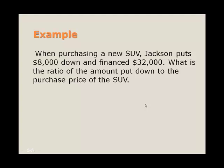When purchasing an SUV, Jackson puts down $8,000 and financed $32,000. What's the ratio of the amount put down and the purchase price of the SUV? So the amount put down was $8,000 and $32,000 was financed. So I think we would first need to figure out how much the actual purchase price was. And so the purchase price is simply the sum of $8,000 and $32,000, so that's $40,000.